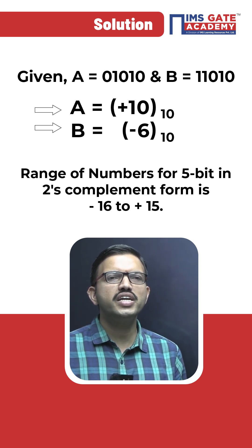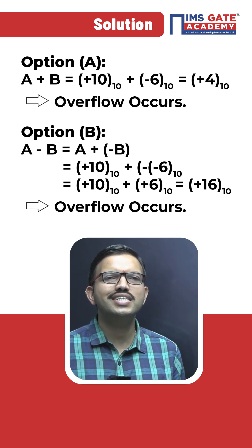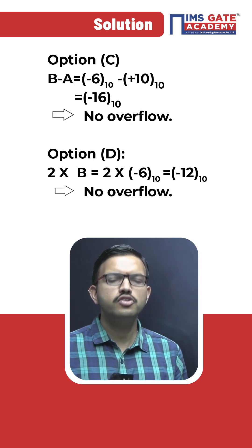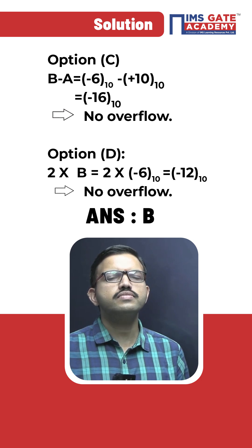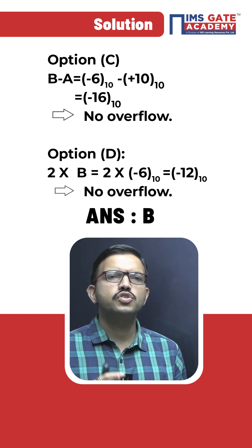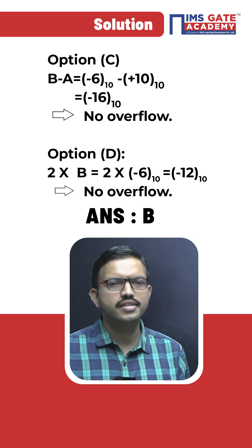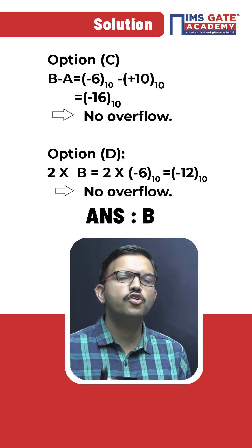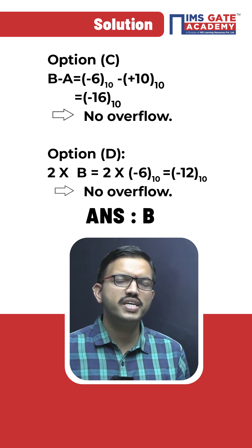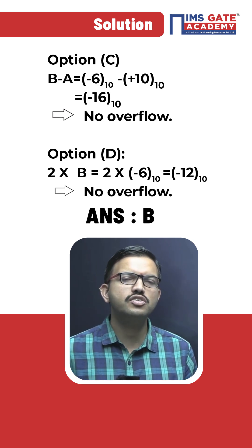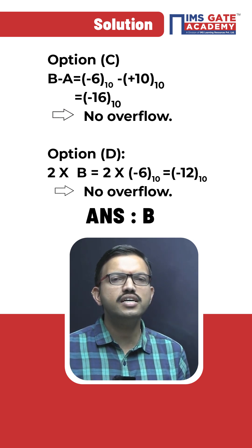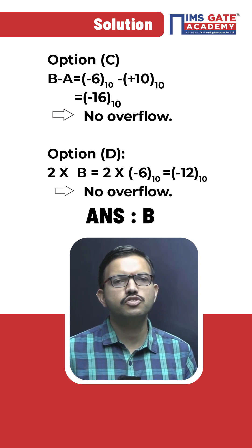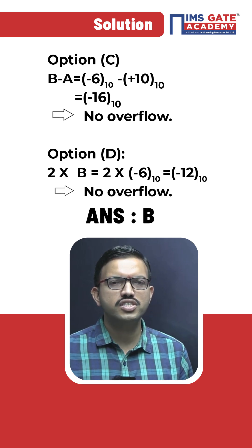For this particular question, overflow occurs in option B, whereas in the remaining three choices overflow is not occurring. Since the question is of MCQ type, option B is the correct answer. They asked in which case overflow occurs, so option B is the answer. Suppose they asked in which cases overflow won't occur, then the remaining three choices would be the correct answers for this question. I hope it is clear for everyone. Thank you for watching this video.